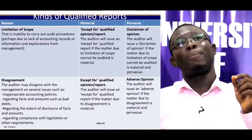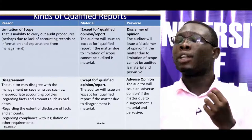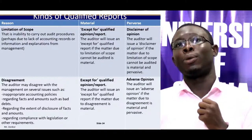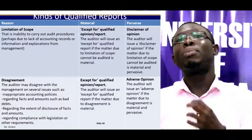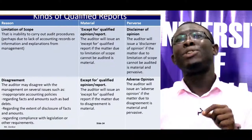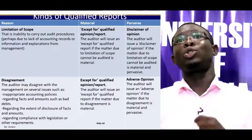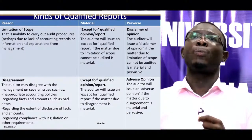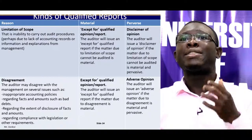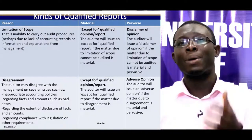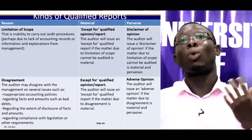If the limitation of scope — that is, the auditor's inability to carry out audit procedures — is considered material, then the type of audit report to be issued is an except-for qualified report. That is, the auditor will issue an except-for qualified report if the matter due to limitation of scope is material but not pervasive.